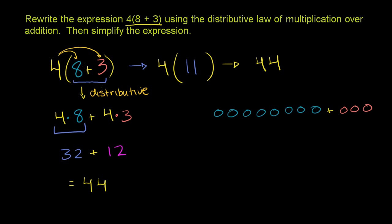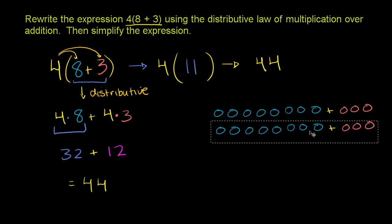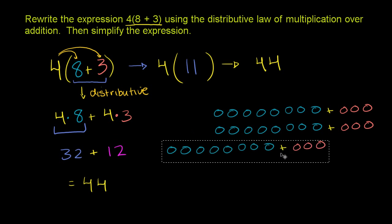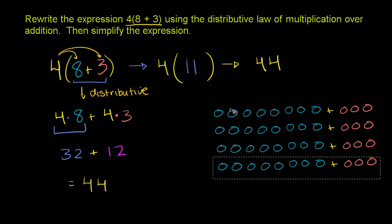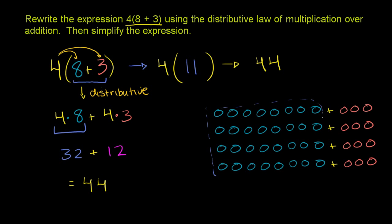Now when we're multiplying this whole thing times 4, what does that mean? Well, that means we're just going to add this group to itself 4 times. So let me copy and paste to do that — we have the group 1, 2, 3, 4 times this expression, which is 8 plus 3. If you were to count all of this stuff, you would get 44.